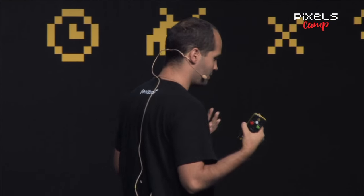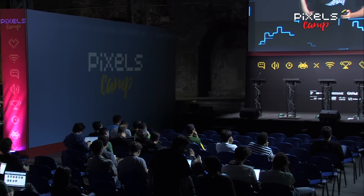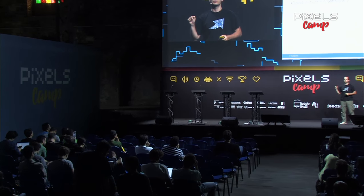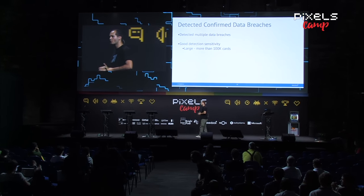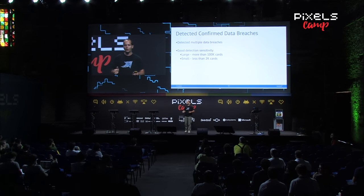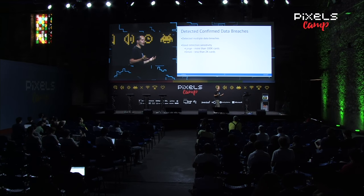We also verified by looking at the places detected as points of compromise that they were actual data breaches. We confirmed them by looking at government sources or even news articles saying this place was hacked, that place was hacked. When that kind of news comes out, we go back to the points of compromise we found in our clients and see that we caught them — before they were on the news. We also have good sensitivity for large points of compromise with more than 100,000 cards compromised, as well as small ones with fewer than 2,000 cards.